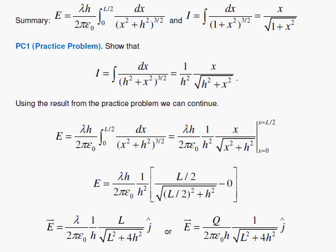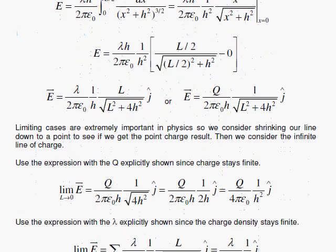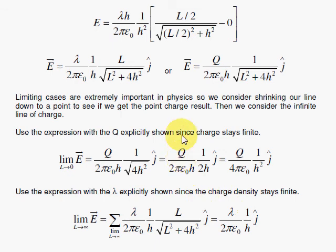And we're going to do what all good physicists do, and that is check extreme cases. The first extreme case is the l is equal to 0. And if the l is equal to 0, I have a point charge q. And so I'm going to use this form that has the q explicitly shown. And if I put l equal to 0, I simply get the square root of the 4h squared, which comes out as 2h.